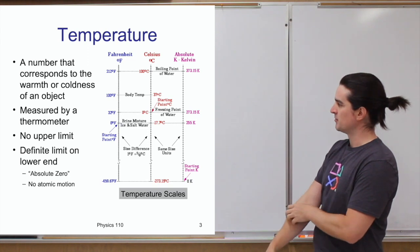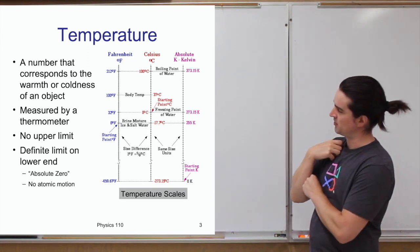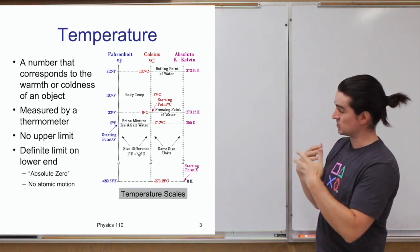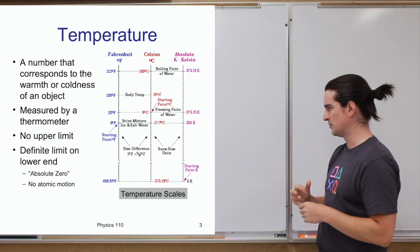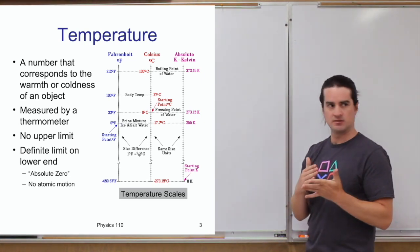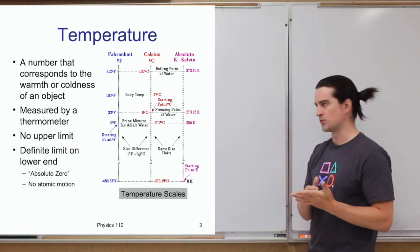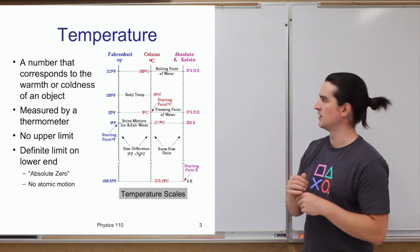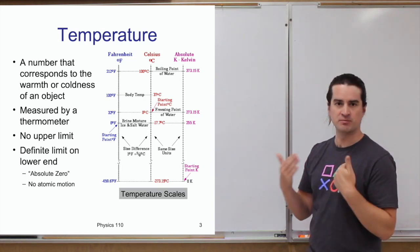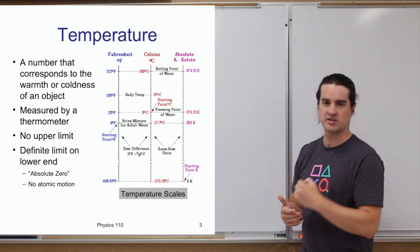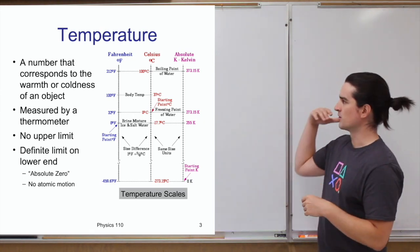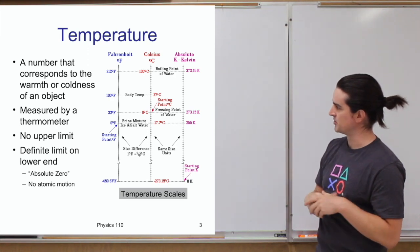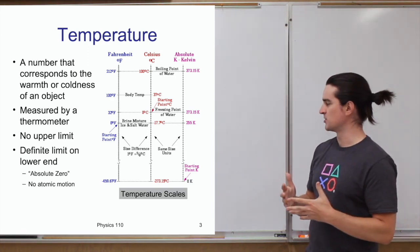In science, the metric system, and most of the rest of the world, they use a scale called Celsius. Celsius is more defined by the freezing and boiling points of water: water freezes at 0°C, water boils at 100°C. Body temperature is right around 37°C.